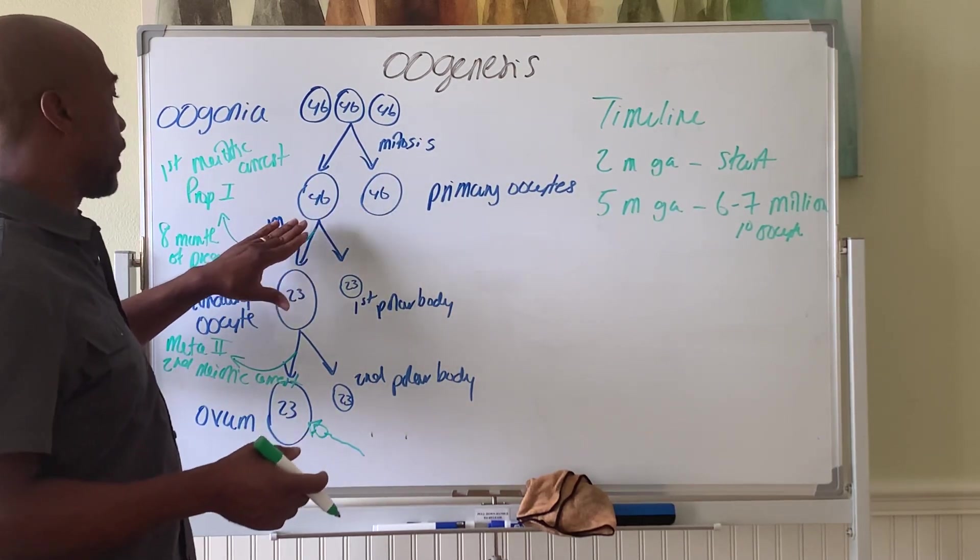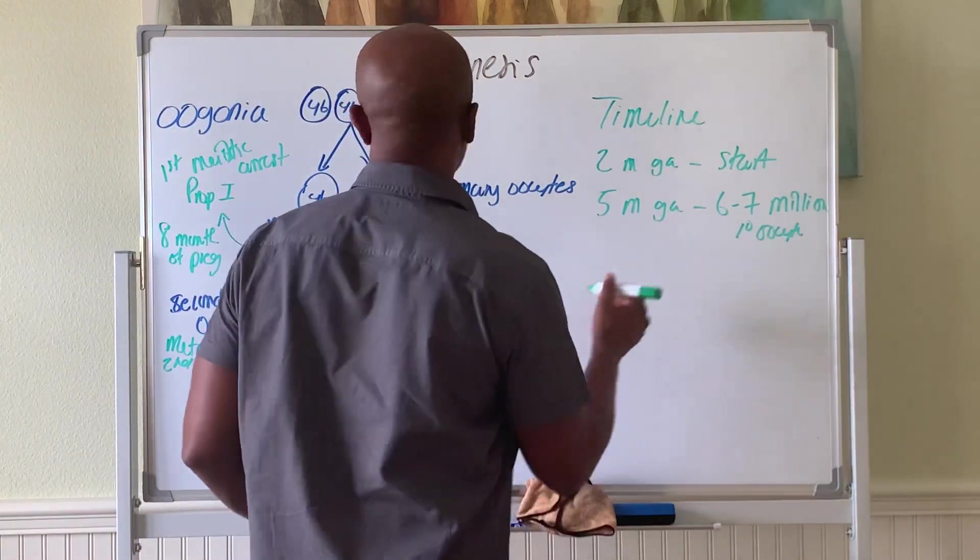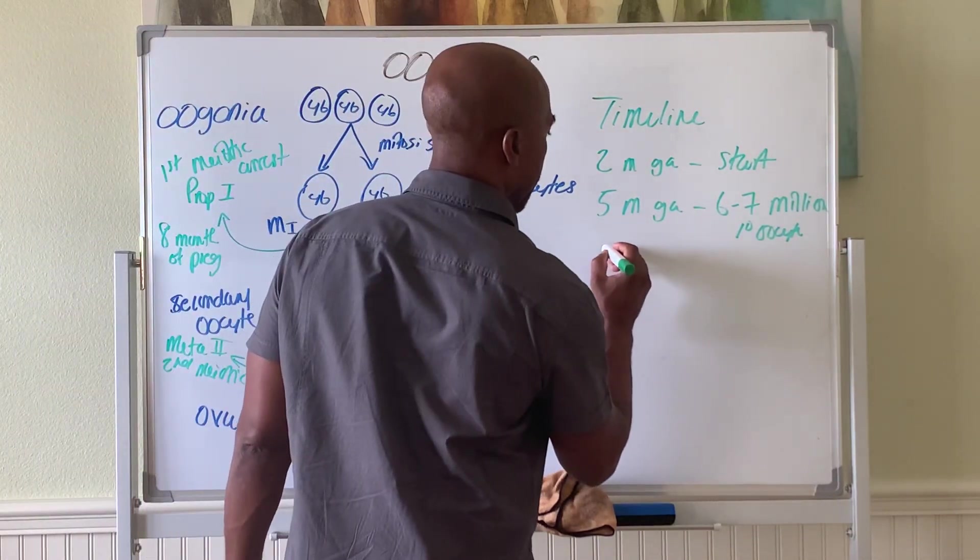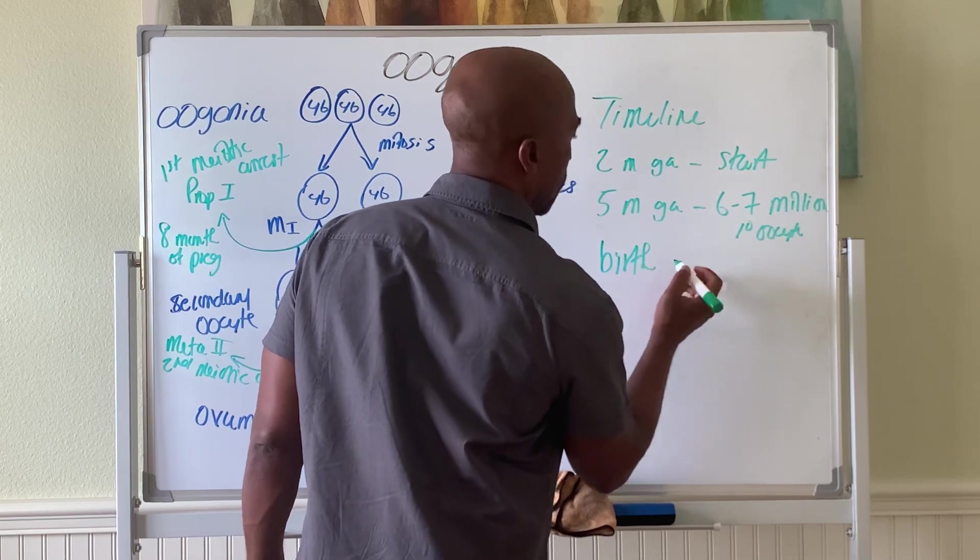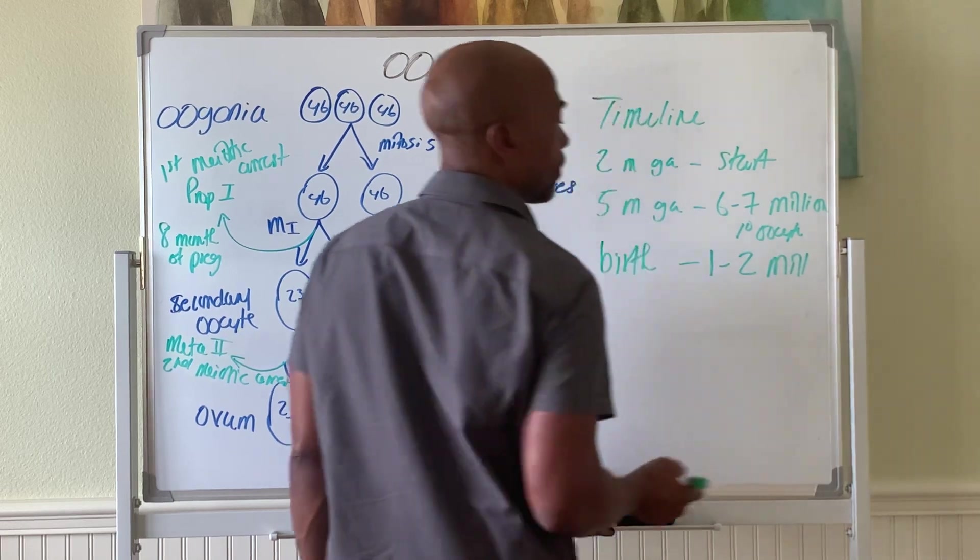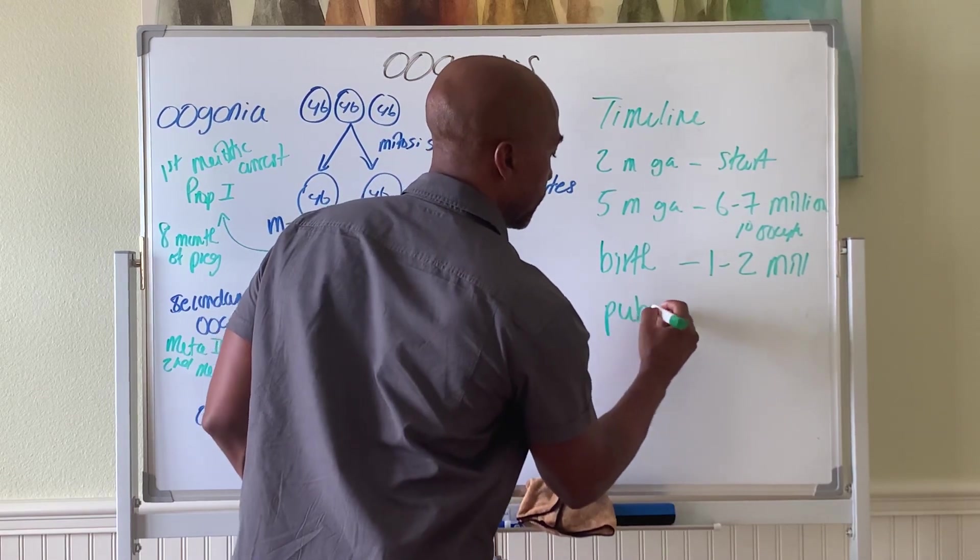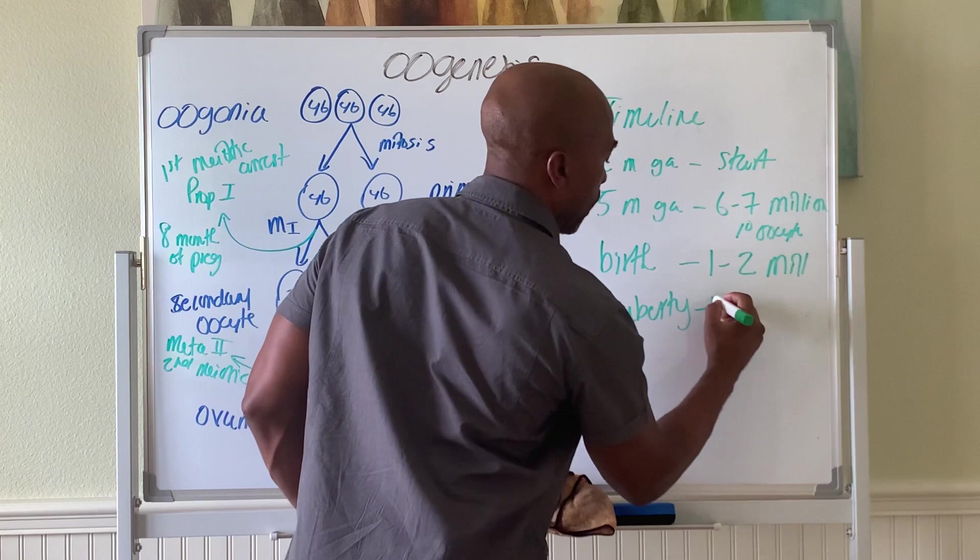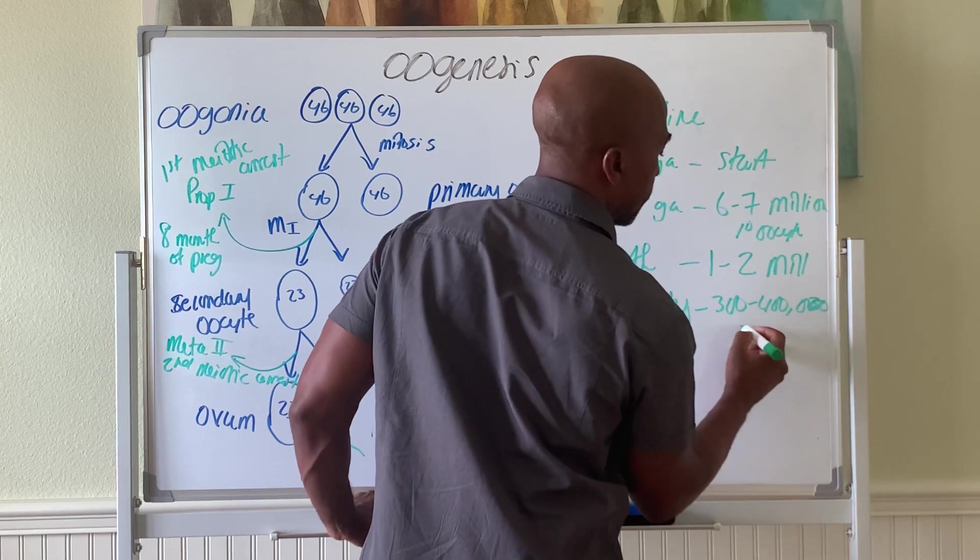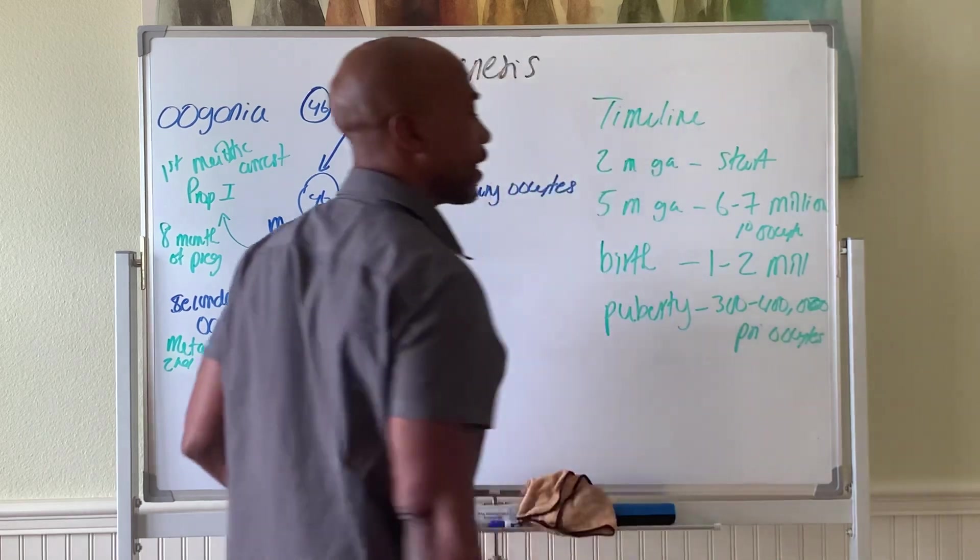And then, you know, begin the process here. And, of course, now they will arrest here in the first phase of prophase one. Then, at birth, you're down to about one to two million because they die along the way. And then, by puberty, you're down to about three hundred to four hundred thousand oocytes.